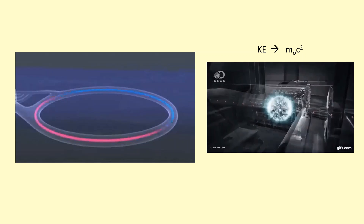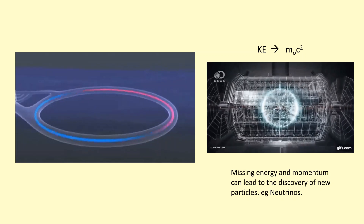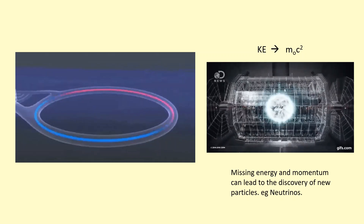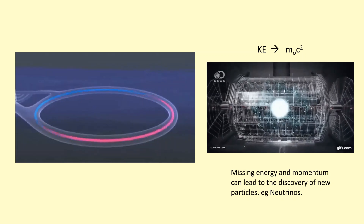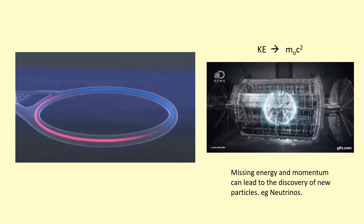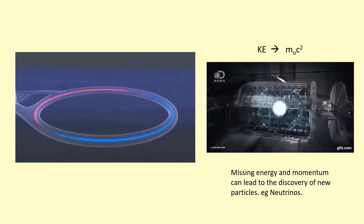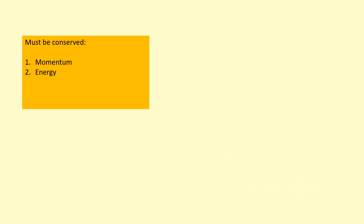The total energy before and after the interaction should be the same. In some interactions, when there appears to be missing energy or missing momentum, this can lead to the discovery of new particles — for example, neutrinos. During beta decay there was some missing energy, which was used to predict the existence of neutrinos, which were later discovered.